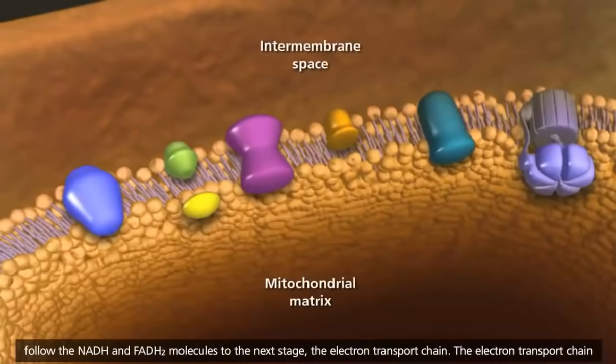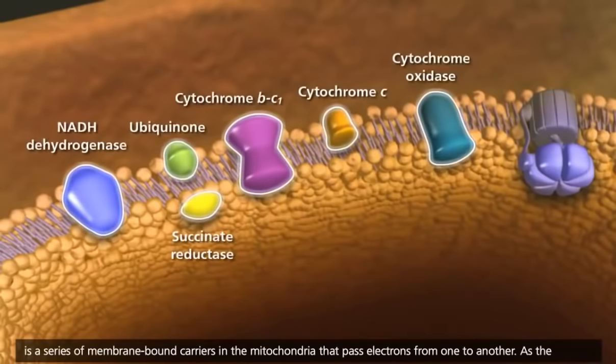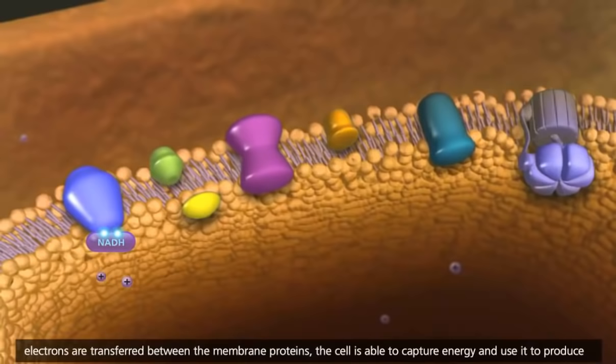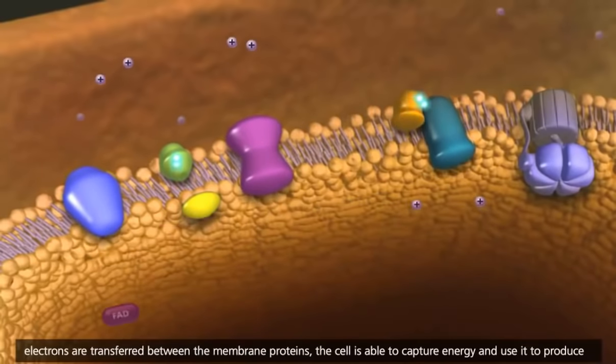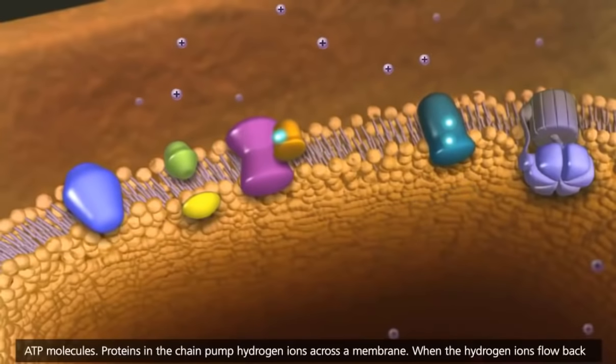The electron transport chain is a series of membrane-bound carriers in the mitochondria that pass electrons from one to another. As the electrons are transferred between the membrane proteins, the cell is able to capture energy and use it to produce ATP molecules.